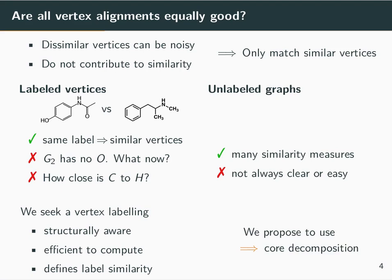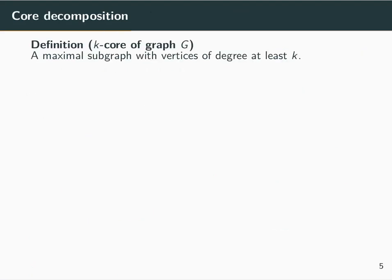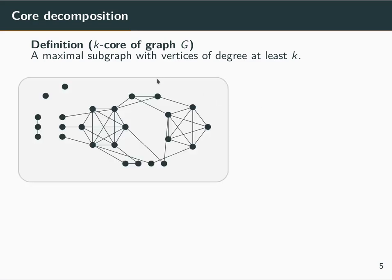One solution is the core decomposition of a graph. In this decomposition, we are trying to find k-cores which are defined as maximal subgraphs whose vertices have degree at least k within the same subgraph.